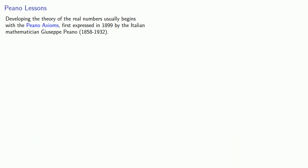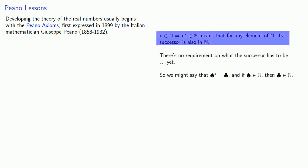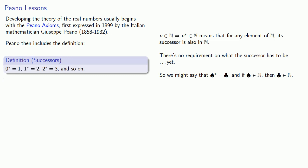Now, remember the Peano axioms specify that every natural number has a successor, but we were unspecific about what that successor was. And so then Peano gives the following definitions. The successor of zero we'll call one. The successor of one we'll call two. The successor of two we'll call three, and so on.